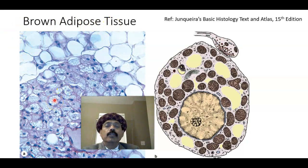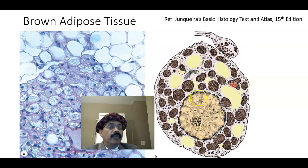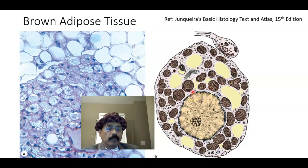Brown adipose tissue is multilocular — we have multiple locules of fat. It has a much greater number of mitochondria, and the nucleus is not at the extreme periphery; it may be close to the center. These cells are smaller than white adipose tissue adipocytes. Brown adipose tissue is present in the newborn and its main purpose is thermogenesis — to increase body temperature — and it will disappear as the child grows.